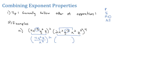For the next set of parentheses, y to the negative 2 moves to the bottom as y squared. There's still a 2, but there's also an x squared times an x squared. When the bases match, we know we can add the exponents to get x to the 4th, z cubed, and the whole thing is to the 4th power.